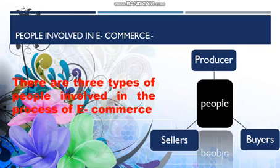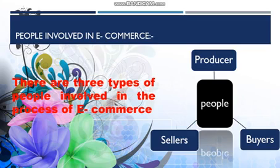Now next, we are going to see who are the people involved in e-commerce service. Basically, there are three types of people which are involved in the process of e-commerce. They are: the first one is the producer, then we have the sellers, and then we have the buyers. Let's understand this concept with the help of an example.